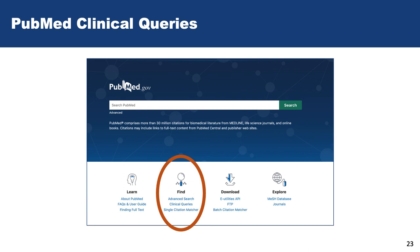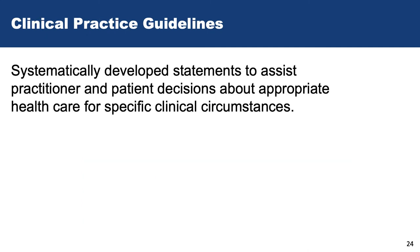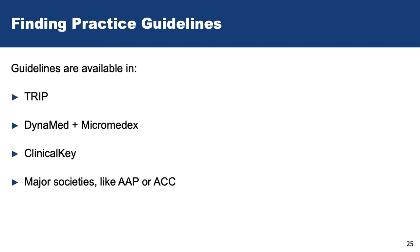You can access PubMed Clinical Queries from the PubMed homepage underneath the Find heading. In it, you can search for high-quality primary research related to therapy, diagnosis, prognosis, etiology, medical genetics, and COVID-19. Clinical Practice Guidelines are systematically developed statements to assist practitioner and patient decisions about appropriate healthcare for specific clinical circumstances. These guidelines are available in the TRIP database, in Dynamed and Micromedex, ClinicalKey, and also from major societies like AAP or ACC.